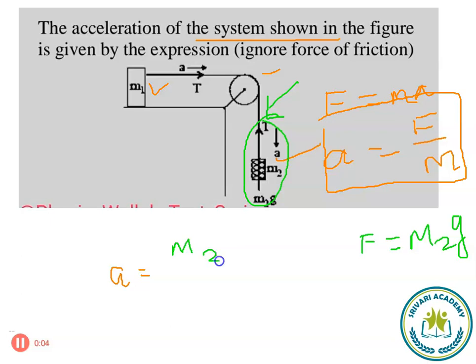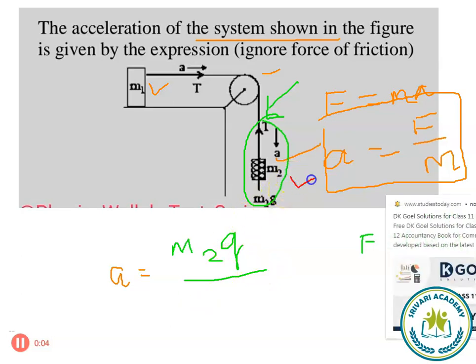m2g divided by what is the mass on this system? There are two masses. One is m2, another one is m1. So m1 plus m2.